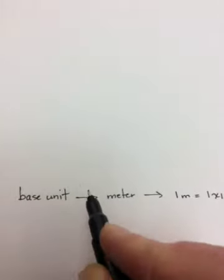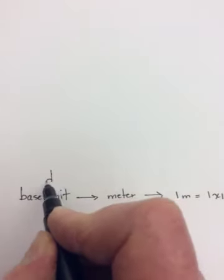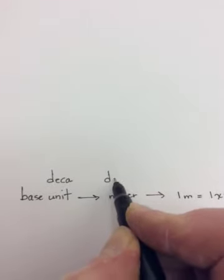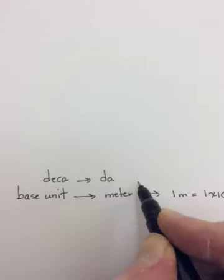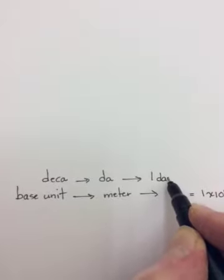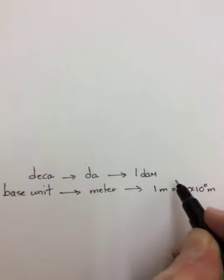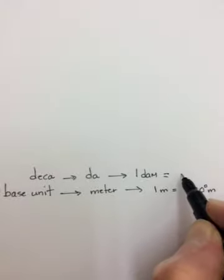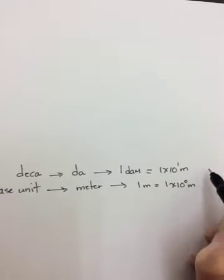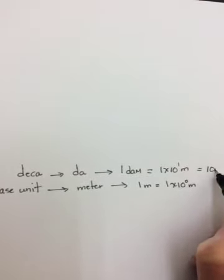So if we go up first, the first one, which you don't see very often, is deca. Its abbreviation is DA. And so for a meter, maybe this is why it's not used very often because it's a DAM. And that would be equal to 1 times 10 to the 1 meters, in other words, 10 meters.